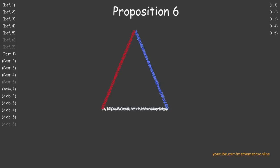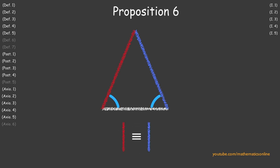In Proposition 6, we prove that if any two angles of a triangle are congruent, then we must have an isosceles triangle.